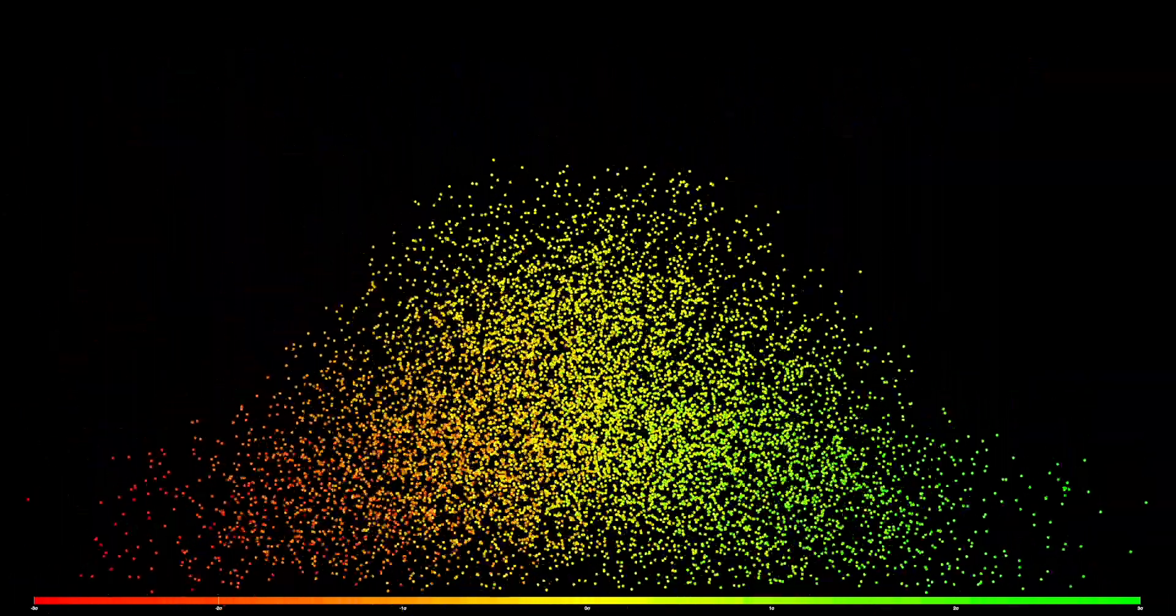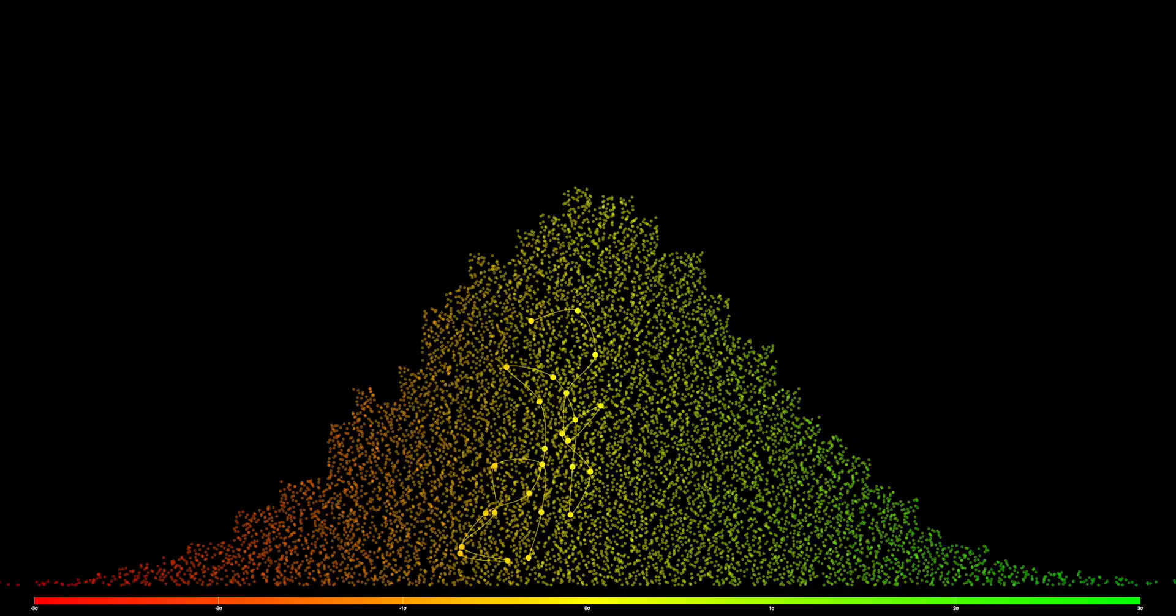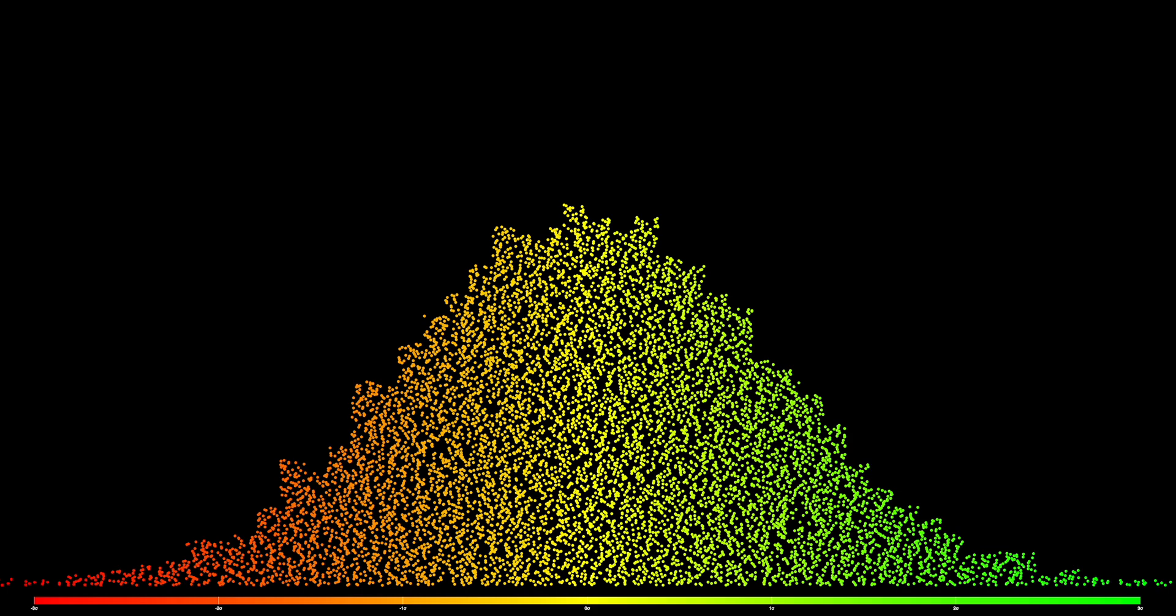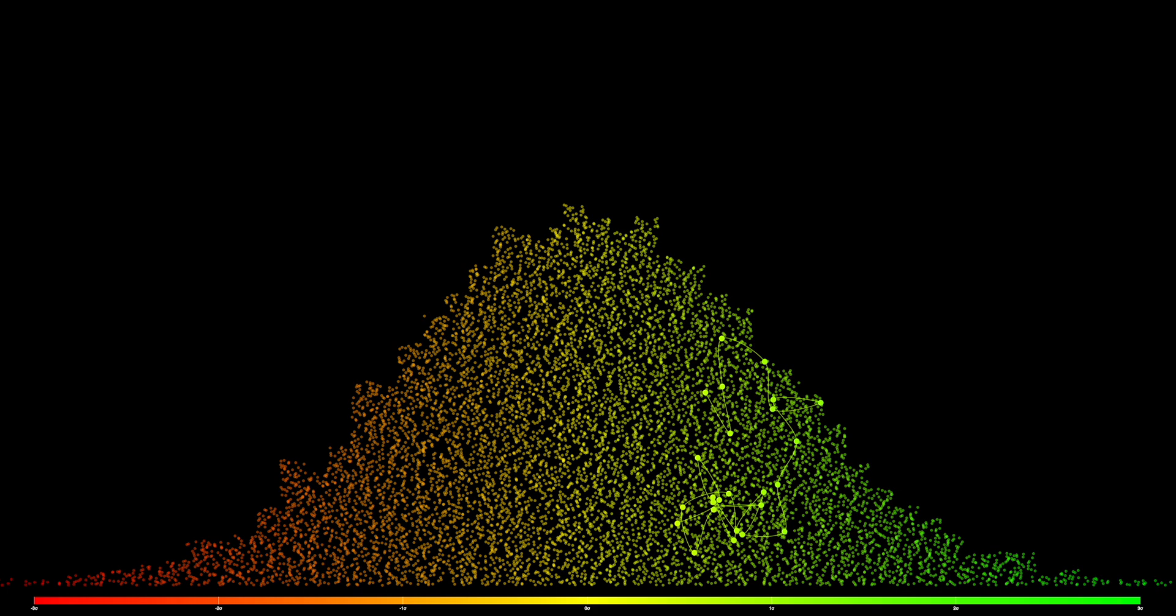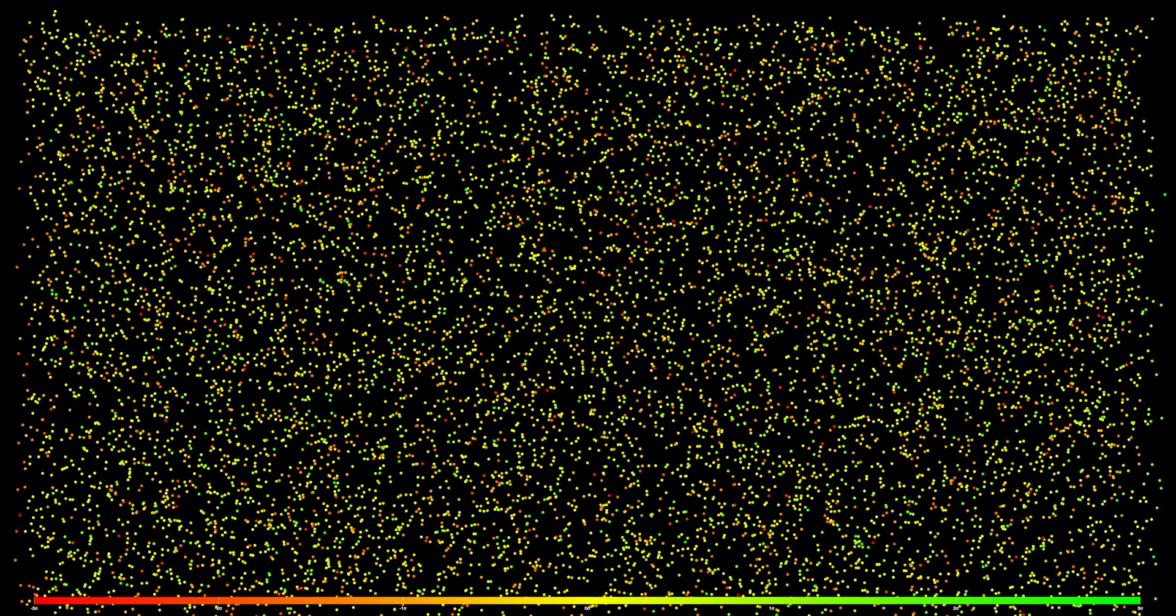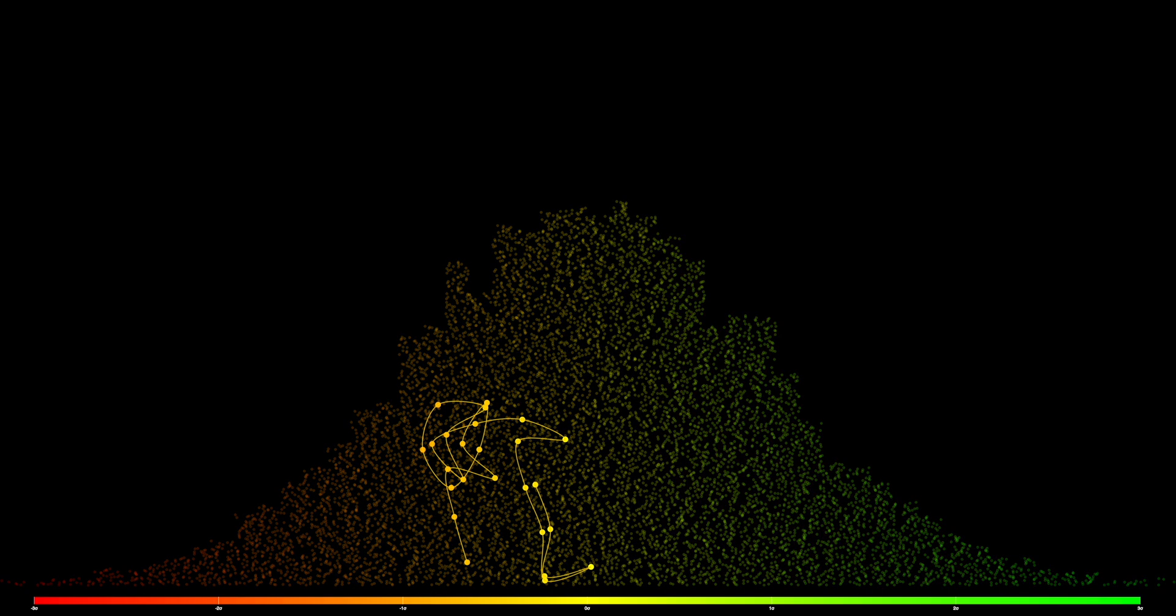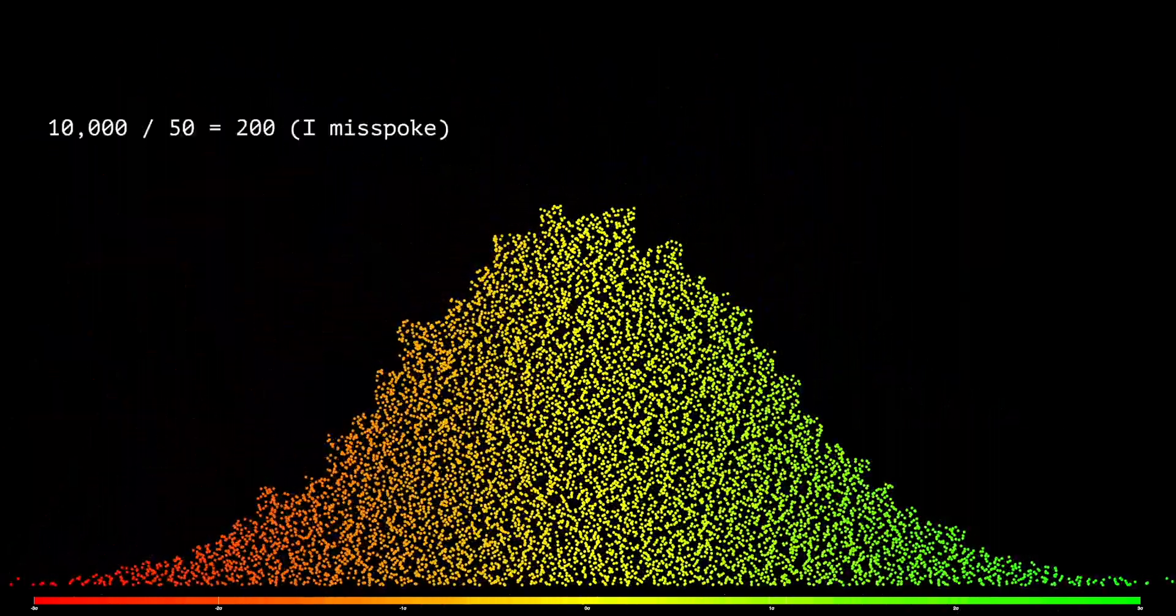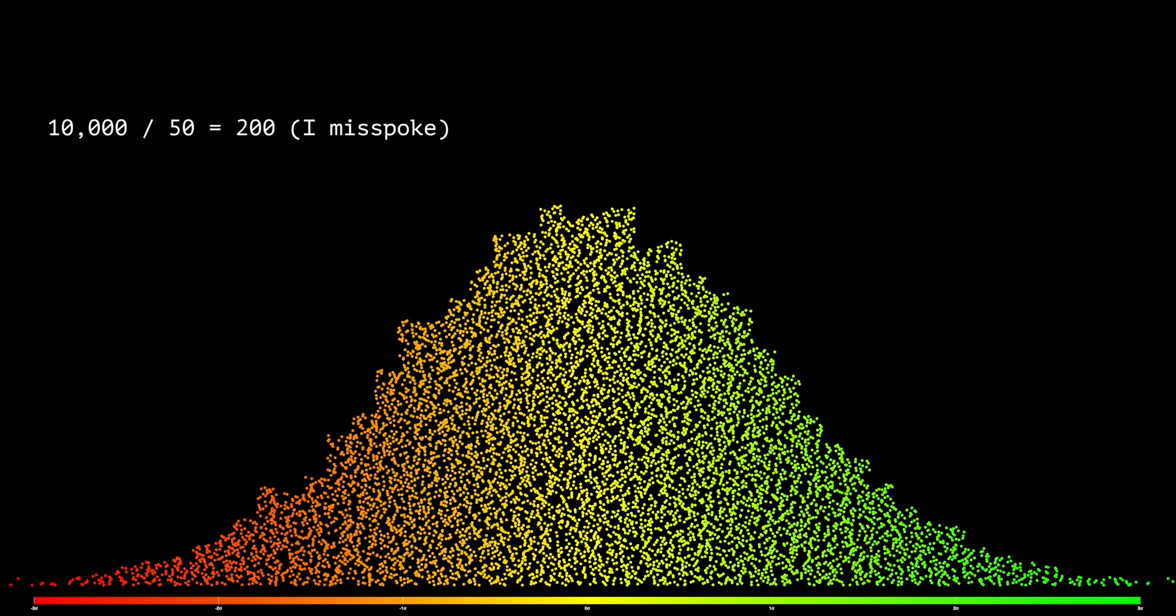The color of the dots indicates how predictive on a univariate basis only each factor is of loss frequency or pure premium or some outcome measure that we're considering. The height of the chart reflects how often or how prevalent that particular feature is in the portfolio. So each dot represents one attribute about one risk, but the collective height is across the portfolio.